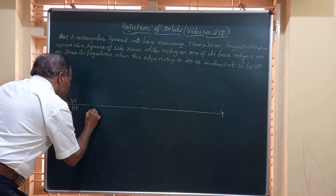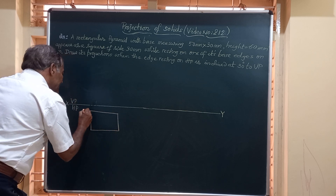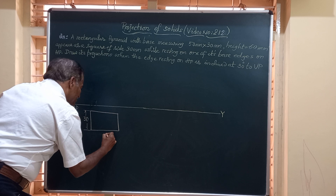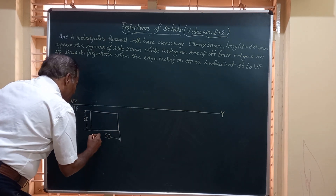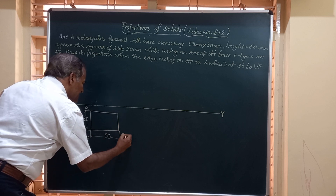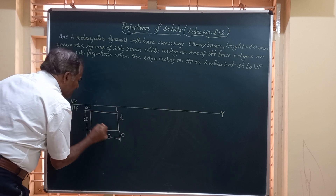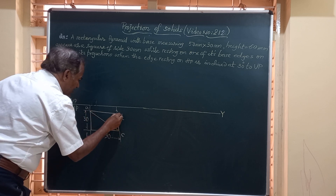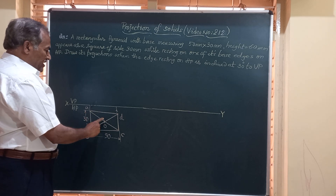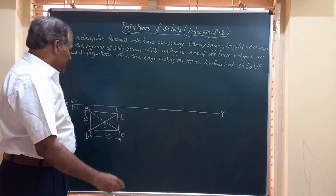Let us start the solution by drawing the top view. Draw a rectangle of the given size 30 by 50 mm — one side is 30 mm and the other is 50 mm. This is the base of the solid; label it as A, B, C, D. Draw vertical projection lines through the corners. Join the diagonals AC and BD with dark lines — they meet at a common point which is the vertex O. In the top view, OA, OB, OC, and OD represent the four slanted edges of the solid.